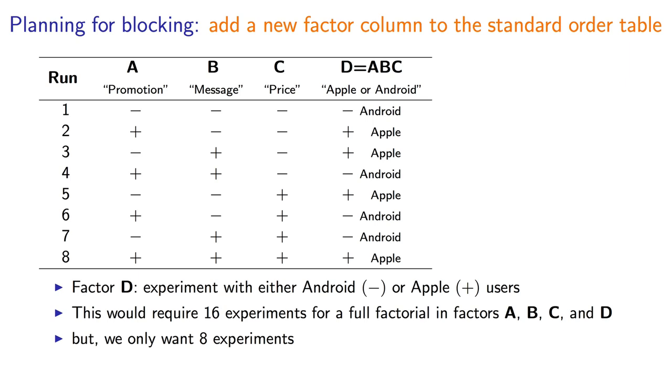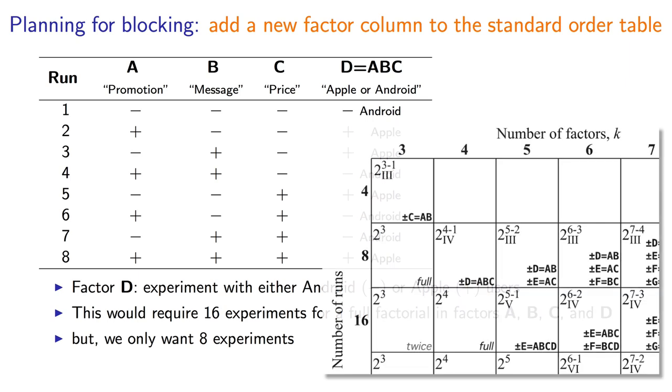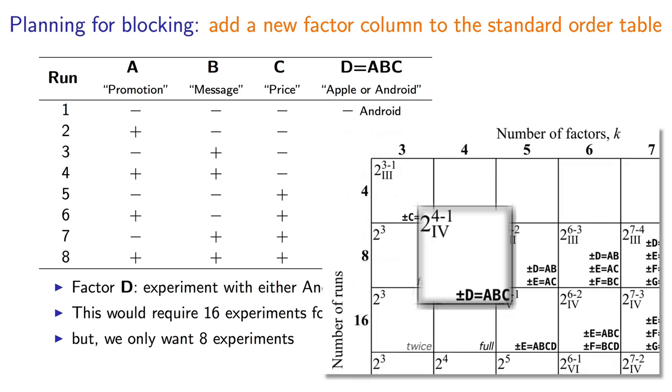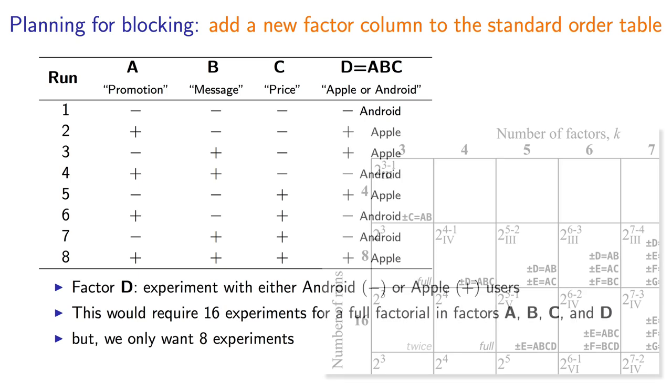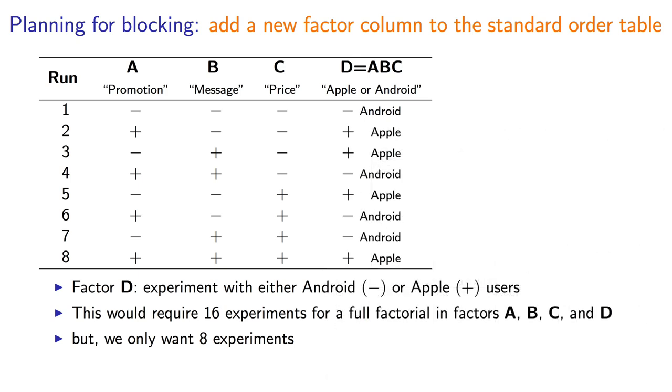Once you understand the principle of half fractions from the prior class, you will perhaps intuitively see that you assign factor D using the table we showed last time, that factor D is generated as the product of A times B times C. Here's the interesting part. Once you've generated factor D in this way, we set all the minus sign experiments to Android users, and all the plus sign experiments to Apple users.